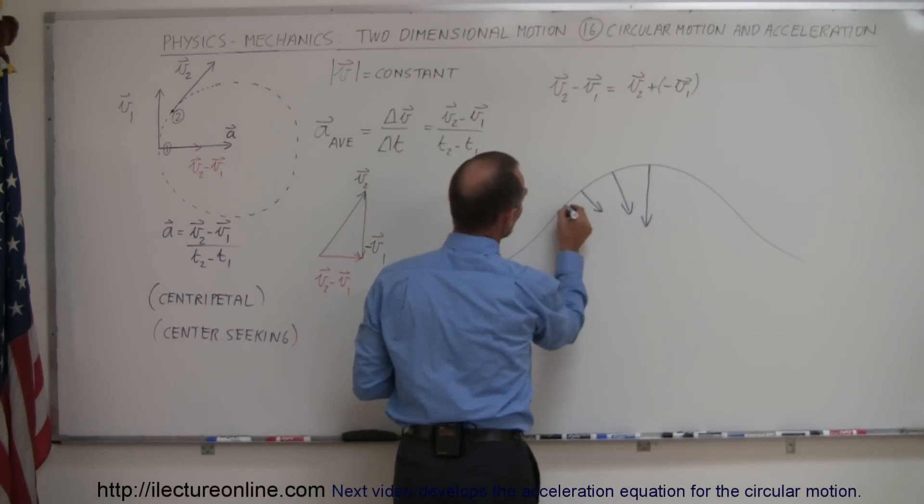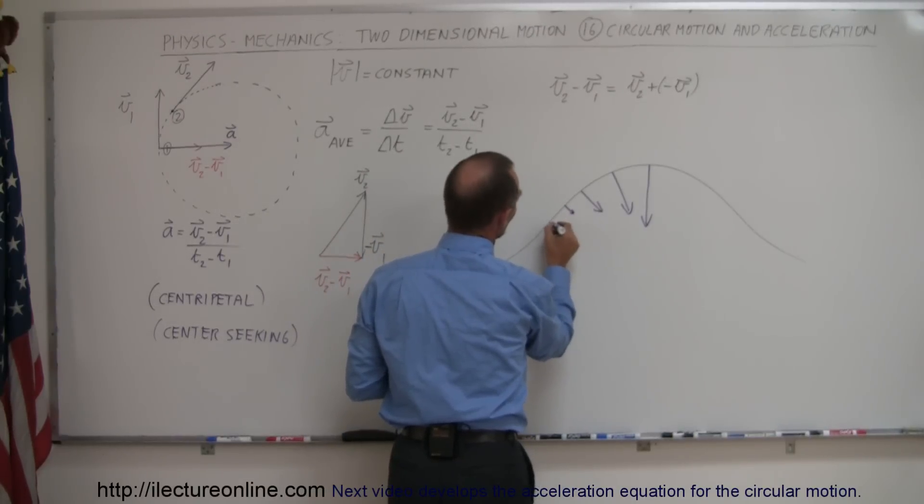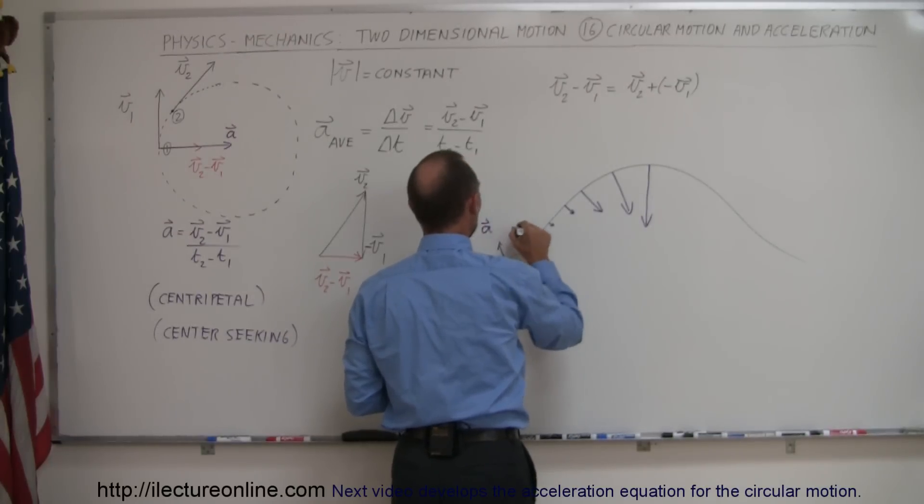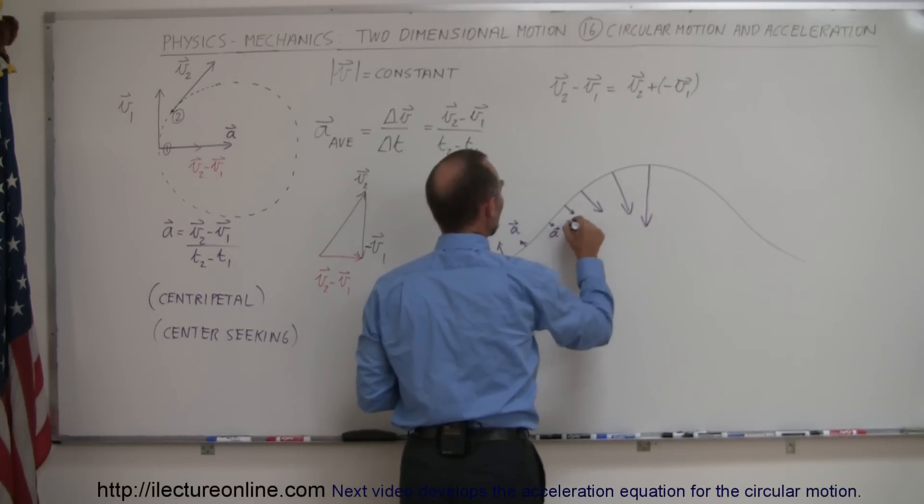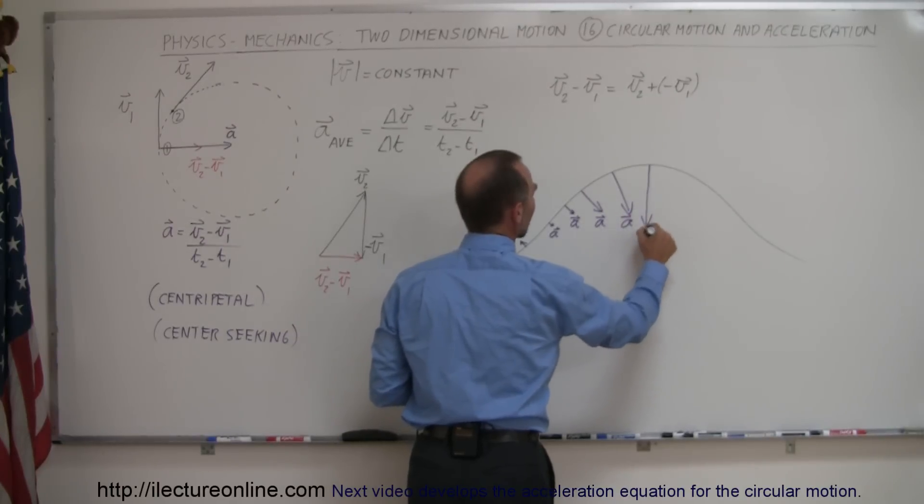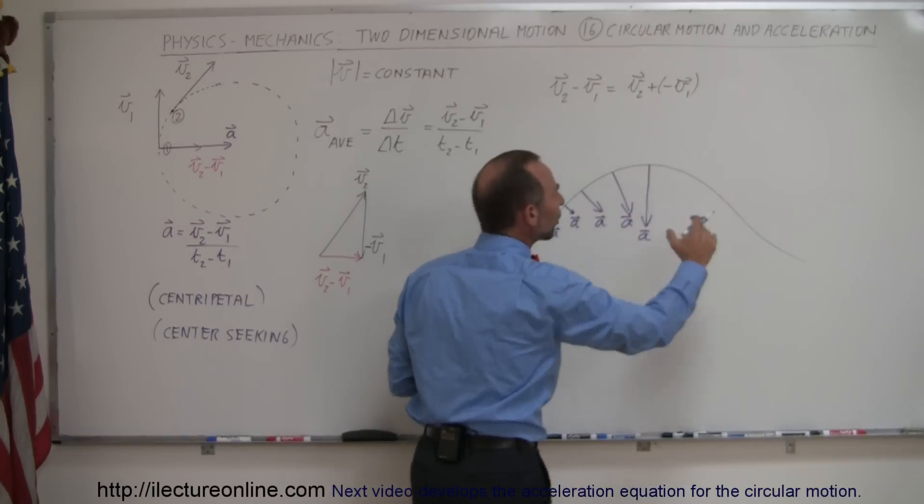So you see that the acceleration here becomes very very small, virtually non-existent. Here the acceleration is actually in the opposite direction, because it's center seeking. So this is what we would call the acceleration, or the instantaneous acceleration, anywhere along this path, due to the travel along the curvature.